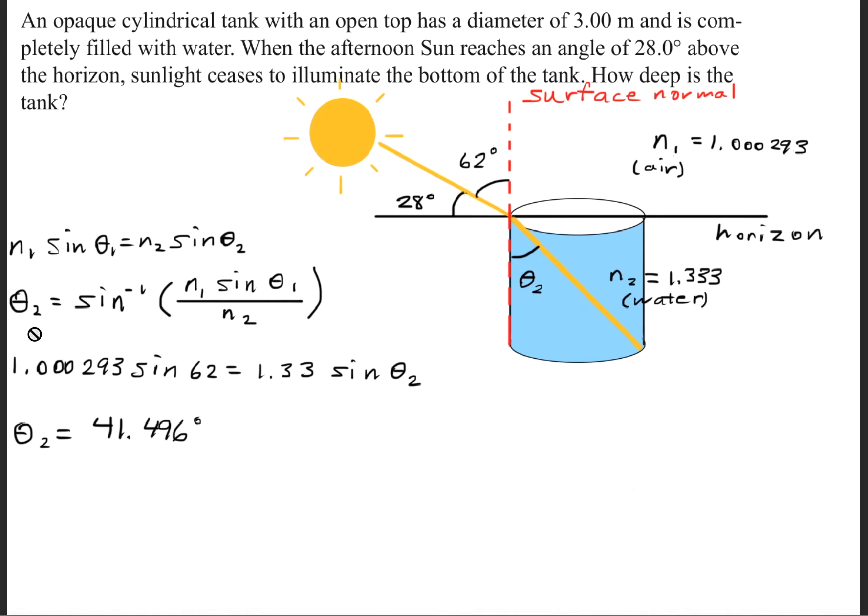So we need to find theta 2, so we'll take the inverse sine of the first index of refraction times the sine of theta 1 divided by the second index of refraction, and that'll give us theta 2 to be 41.496 degrees.